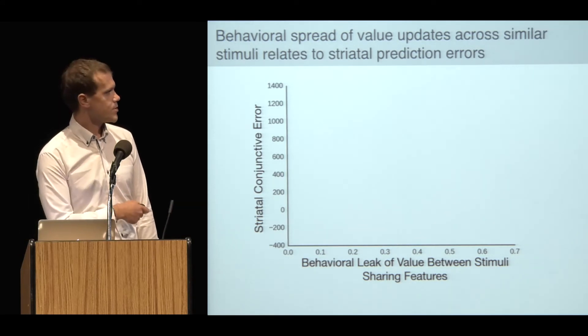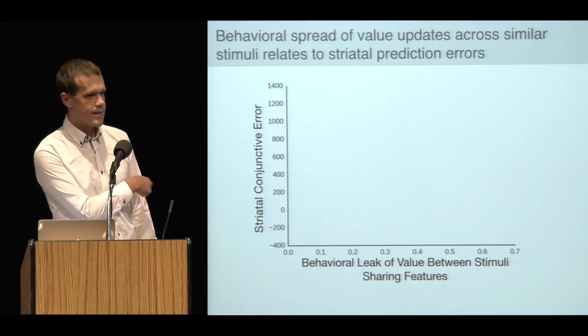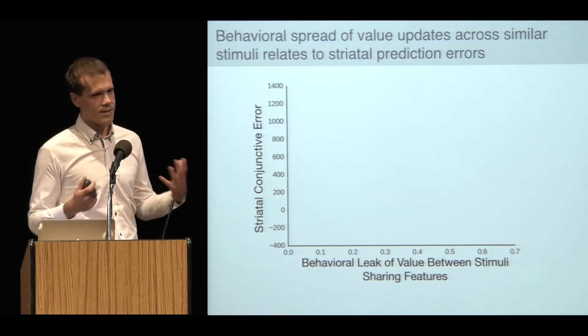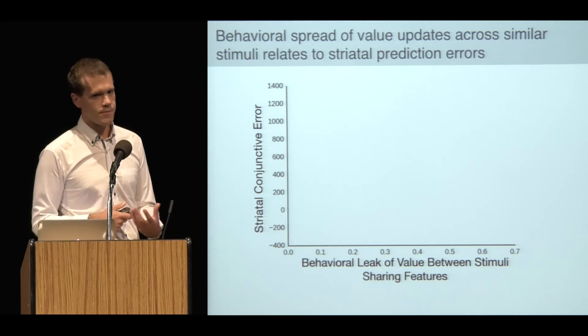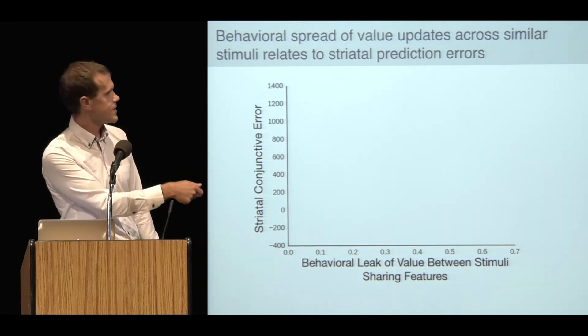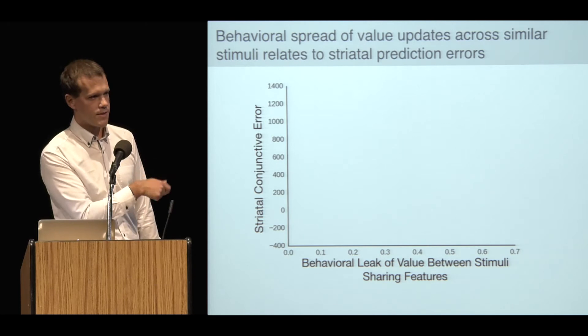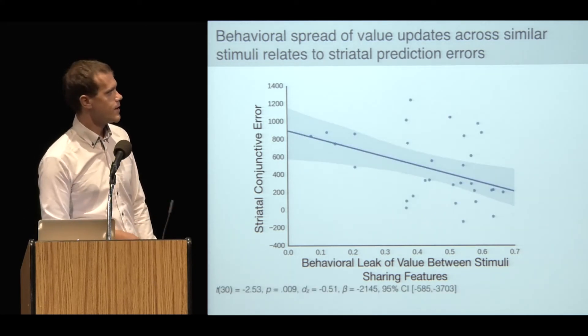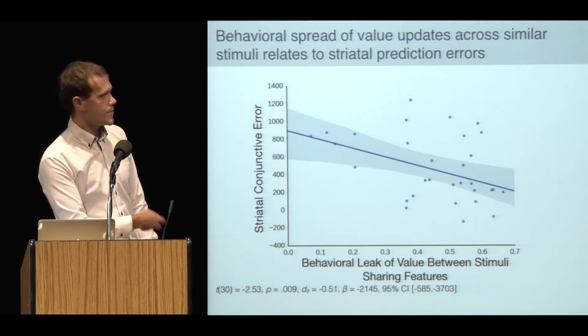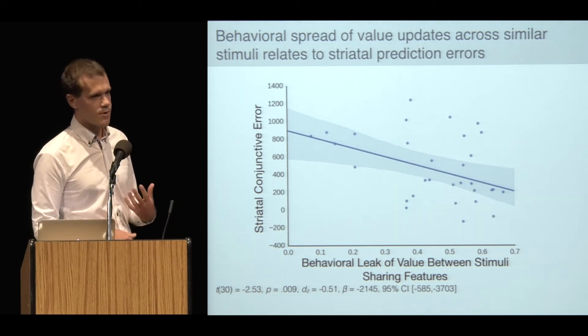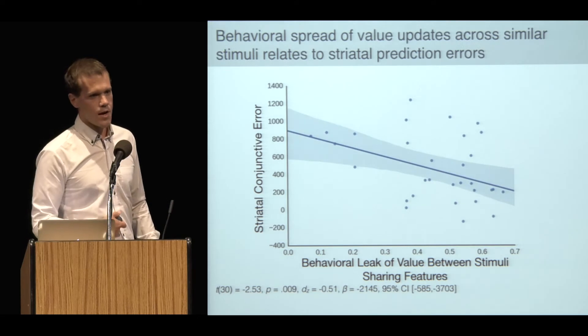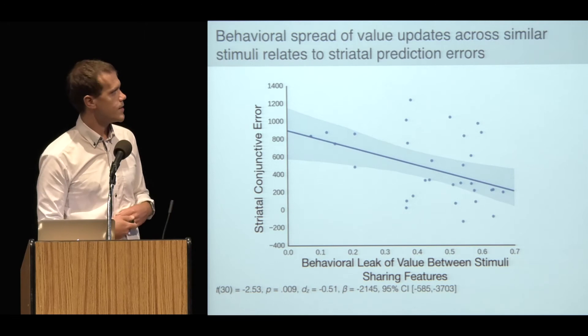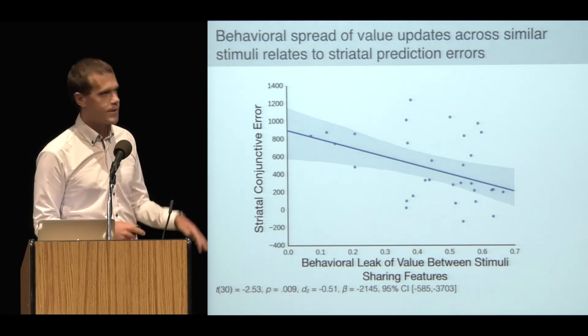I wanted to make this connection to behavior explicit, so I'm doing a between-subjects correlation. On the x-axis is a measure of how leaky each subject's behavior is, how much they confuse conjunctions and features. On the y-axis is the magnitude of the proportion of the striatal error that can be accounted for by this conjunctive learning. You can see that subjects who behaviorally confuse features and conjunctions more also have less of a striatal conjunctive error response. Although between subjects correlations with these size samples should be interpreted with a grain of salt.